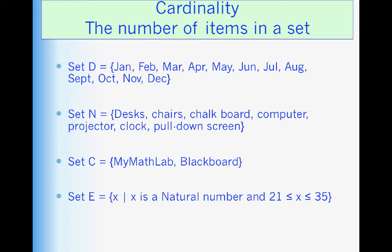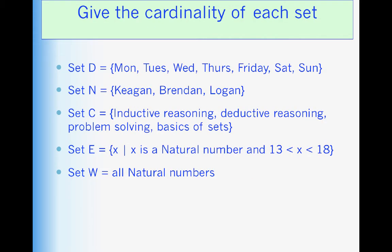Let's talk about the idea of cardinality. Cardinality is the number of items in a set. So you just simply count them. In the first one we have 12 items. So we use the notation little n means cardinality. The cardinality of set D is equal to 12. The cardinality of set N is equal to 7 because there are 7 items in that set. The cardinality of set C is equal to 2 because there are 2 items in that set. And the cardinality of set E is 15. So now give the cardinality of each of these items.